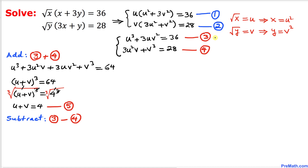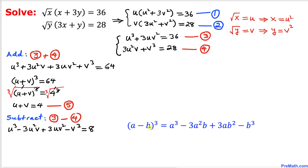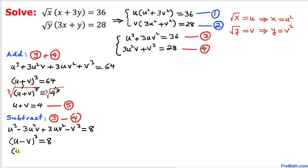Now let's subtract equation 3 minus equation 4. On the left-hand side we get u cubed minus 3u squared v plus 3uv squared minus v cubed, and on the right-hand side 36 minus 28 gives us 8. Applying the formula for a minus b cubed, the left-hand side becomes u minus v, all cubed, equals 8, which is 2 cubed.